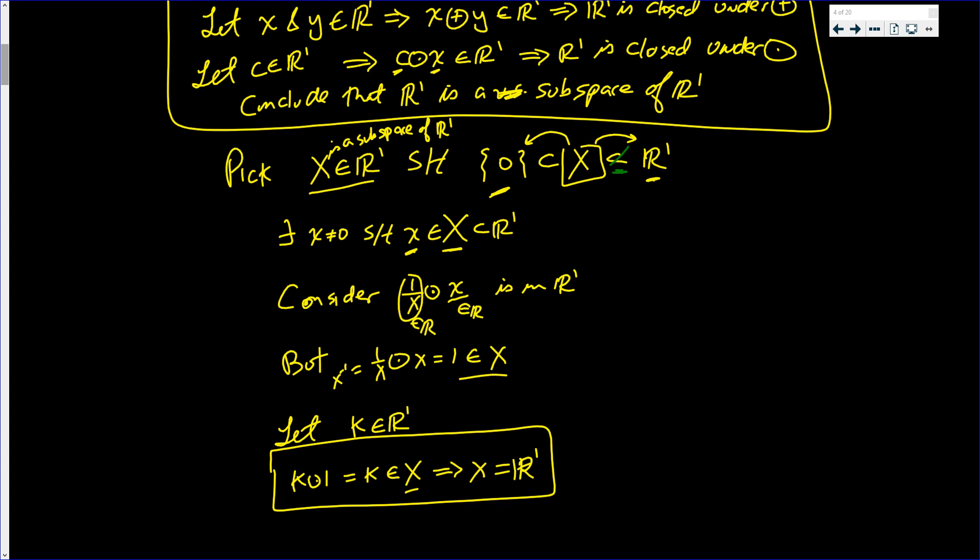So we tried to pick something in between those two sets. And we failed. There is no subspace between the two. It turned out that the one that we, the arbitrary one that we picked, turned out to equal R1.